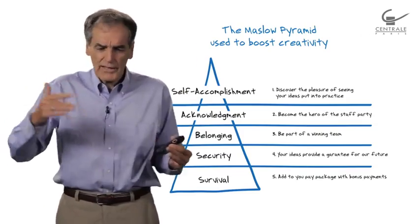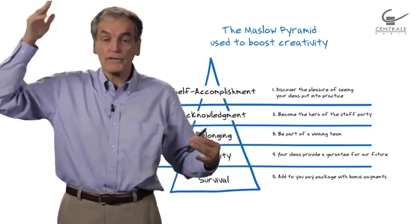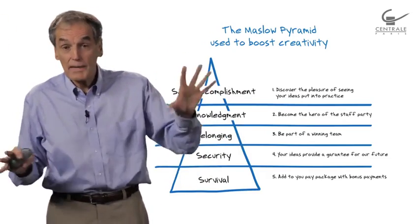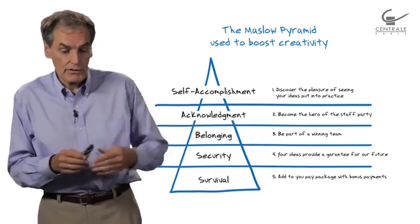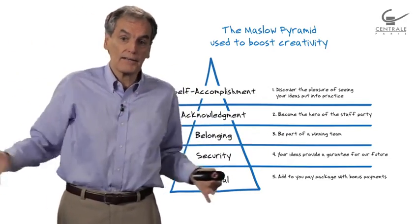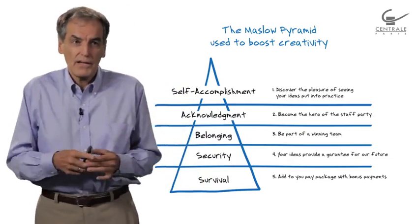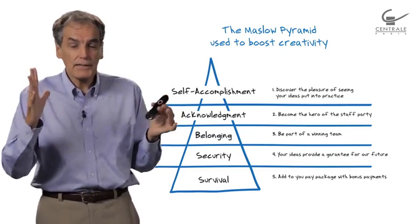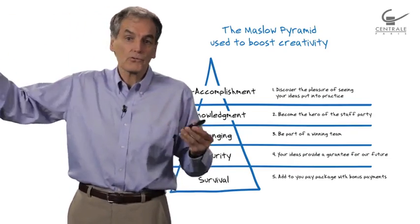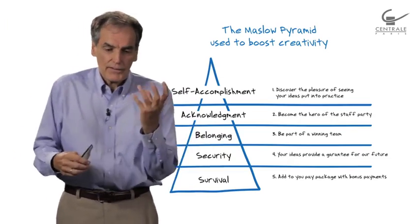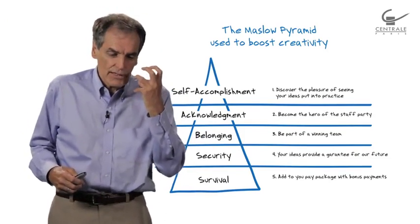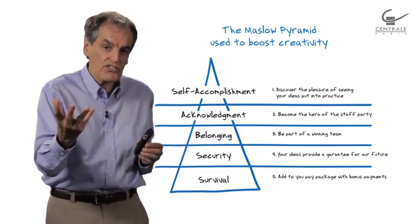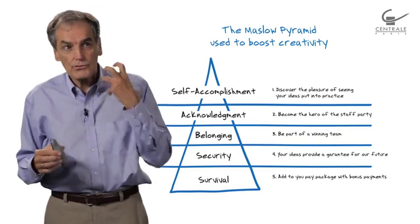Number three: give an idea and you'll be a member of the creative people team in the company. On the fourth level, give your idea and maybe you'll be recognized at the end of the year. Maybe there's a big party, you have five minutes with the president. At the top of the pyramid, give your idea and maybe one day you'll see this idea become reality. Thanks to this pyramid, you can organize different ways to encourage people to deliver their ideas. It's a model, and a model is useful when used by many people.